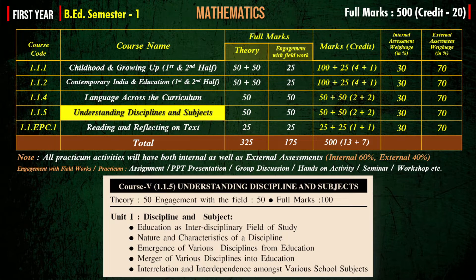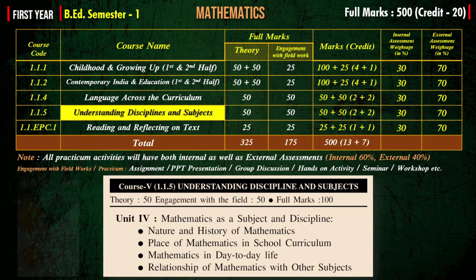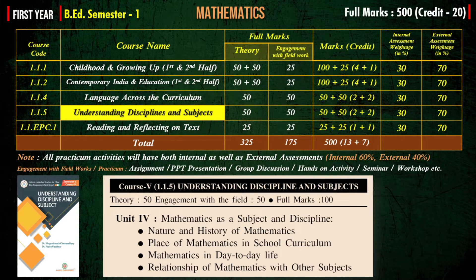In Unit 1 of Course 5, Understanding Disciplines and Subjects, you have to read education as an interdisciplinary field of study, nature and characteristics of a discipline, emergence of various disciplines from education, merger of various disciplines into education, and interrelation and interdependence among various school subjects. In Unit 4, you have to read mathematics as a subject and discipline, covering nature and history of mathematics, place of mathematics in school curriculum, mathematics in day-to-day life, and relationship of mathematics with other subjects.